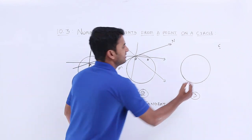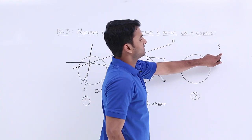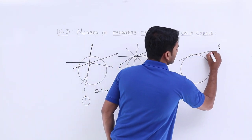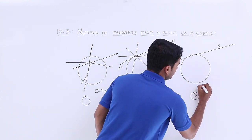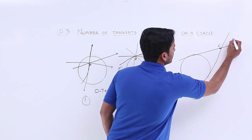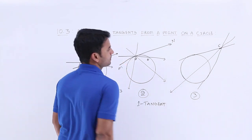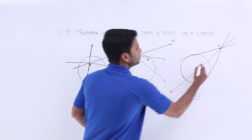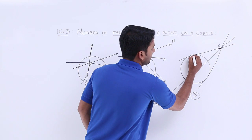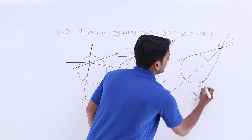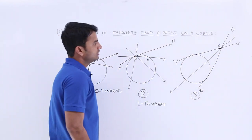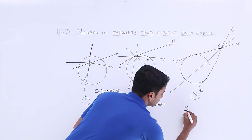Coming to Case 3: we have a point C that is outside of the circle. We can draw a number of lines through this point towards the circle, but only two lines have just one point of contact each — that is line PQ and line XY. So in this case we get two tangents.